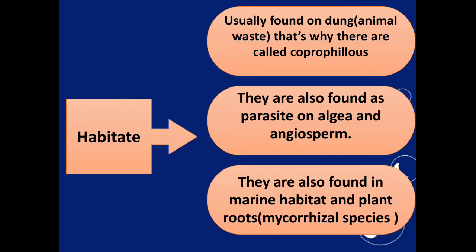Habitat: Ascomycota are usually found on animal waste, and they are also found as parasites on algae and endosperms. They are also found in marine habitats and plant roots. For example, they are present in the form of mycorrhizal fungi — fungi and roots of higher plants live together, mutually beneficial to each other, forming an association called mycorrhizal. Myco means fungi and rhizal means root.